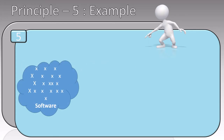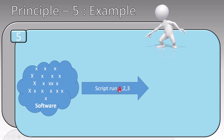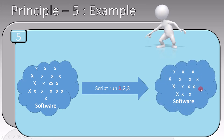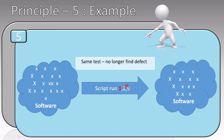Let's see an example to understand the fifth principle. Suppose there is software with 20 defects in it. When you run your script for the first time, you find 5 defects. Then the software is left with 15 defects. Now, if you don't change the test script and you run it for the second and third time, you will find no more defects in the software.